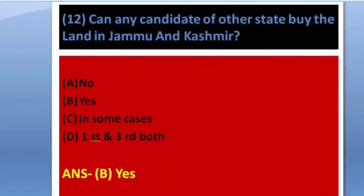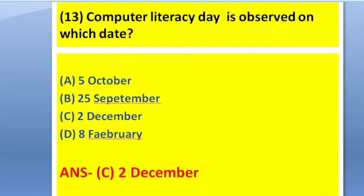Next question: Can any candidate from another state buy land in Jammu and Kashmir? Options: A — No, B — Yes, C — In some cases, D — First and third both. The answer is option B — Yes, because Article 370 has been removed.